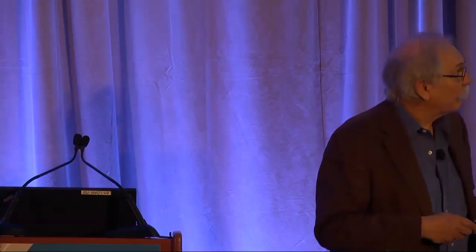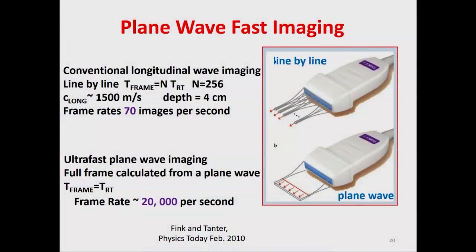Another recent advancement is fast imaging using plane waves. A normal transducer shoots 256 lines to create one image frame — for a depth of 4 centimeters, that gives a frame rate of about 70 per second. But with a plane wave where all the elements are excited at once, you can get frame rates up to 20,000. This has opened up many new possibilities.